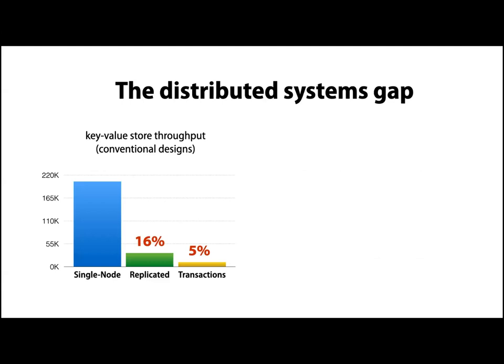We've always known there was a cost to doing things in a distributed environment. These are some random numbers from a pretty conventional key-value store implementation from five or seven years ago. We get some reasonable performance on a single node, but we drop to 16% of that performance once we start doing replication to be fault tolerant on a distributed cluster. And if we want to do transactions to support consistency in a multi-server environment, that's even more expensive. But a lot has changed in the intervening years.